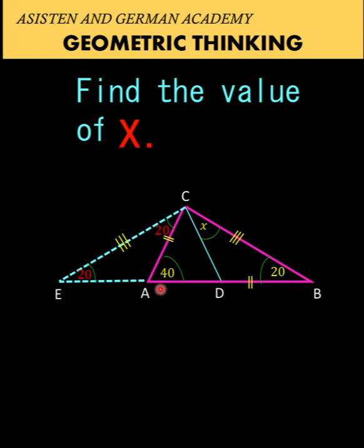Side CA is congruent to side EA. Notice now that we have side-angle-side of one triangle congruent to the side-angle-side of another triangle. By the side-angle-side congruence postulate,